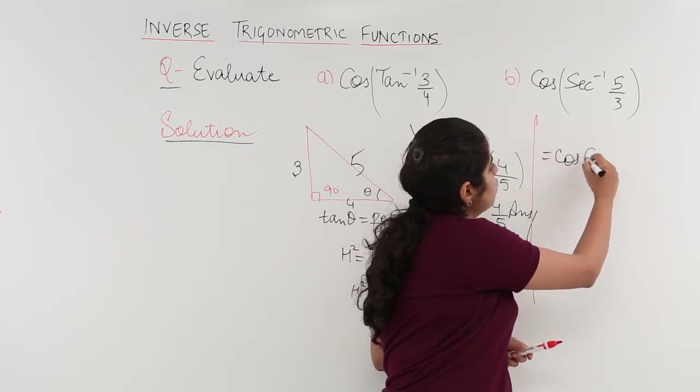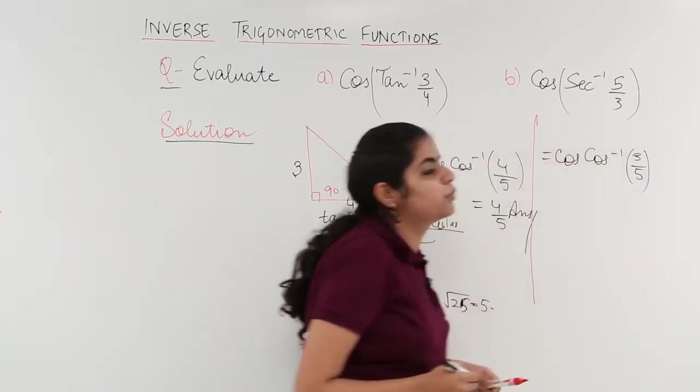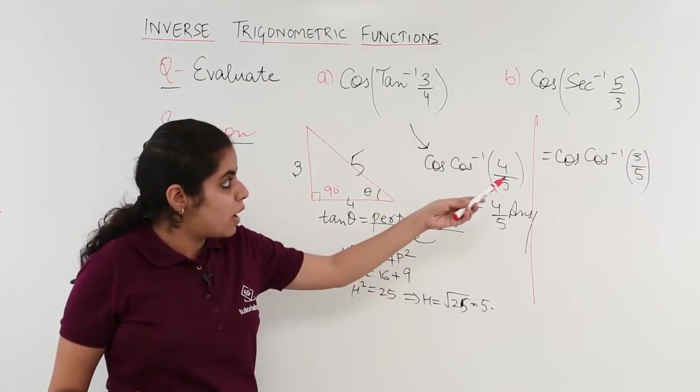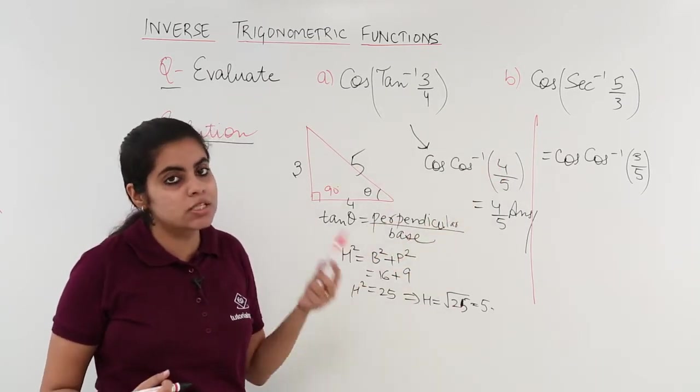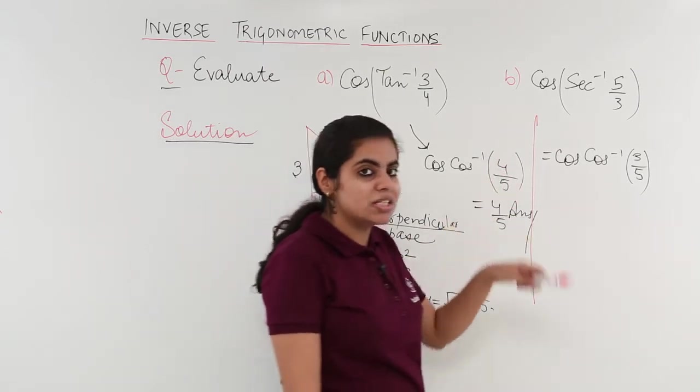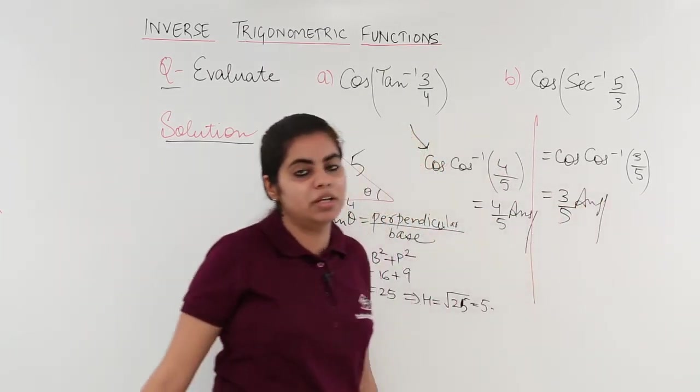So simple solution to this: you write here cos, you write here cos inverse and you just take the reciprocal. Don't need drawing a triangle, just go about reciprocaling because secant and cos are reciprocals of each other. Cos and cos inverse nullify, answer is left as 3 upon 5.